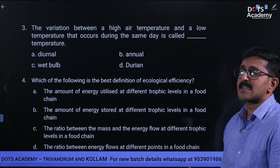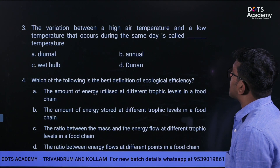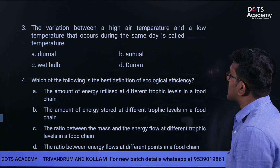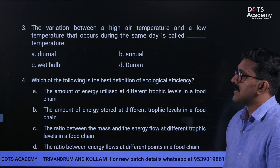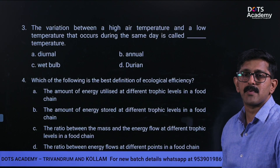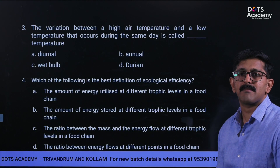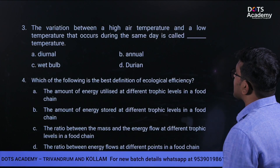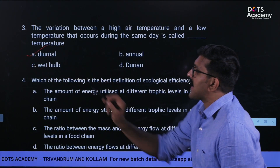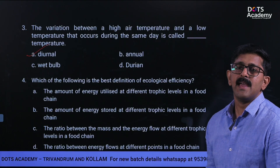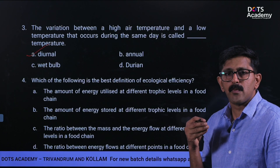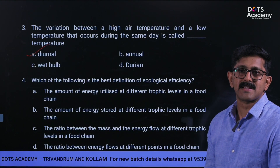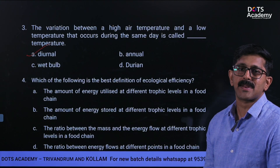The variation between high air temperature and low air temperature that occurs during the same day is called what type of temperature? The high temperature and low temperature occurring within one day is called the diurnal range of temperature. Option A is the answer. Annual range of temperature is a different concept.